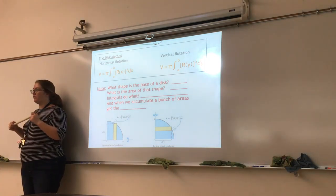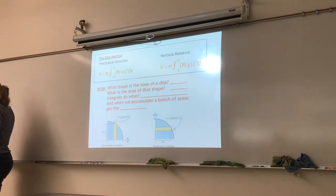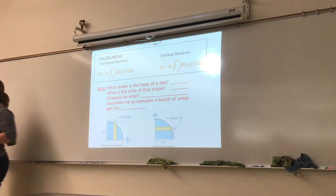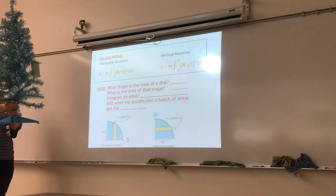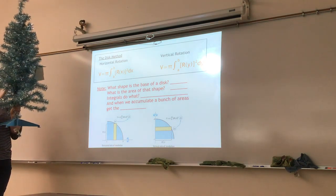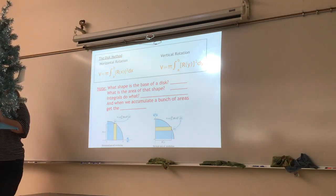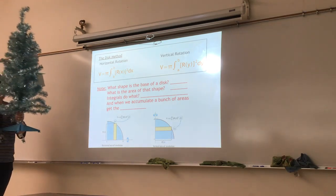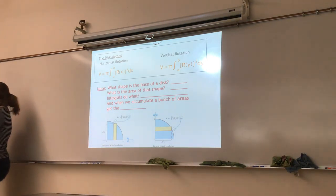With area, your bounded area was the same no matter what. But now as you rotate a shape, depending on if you rotate it horizontally or vertically, it will be different. If I take this and rotate it horizontally, that's creating a really big circle. Whereas if it rotates around the y-axis, it's creating a very different shape than when it rotates horizontally.